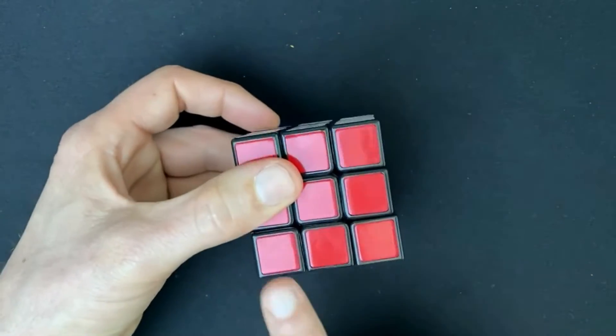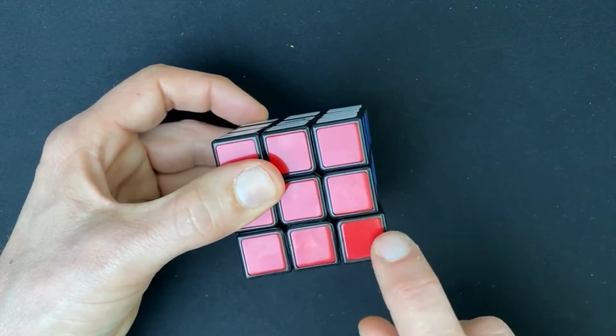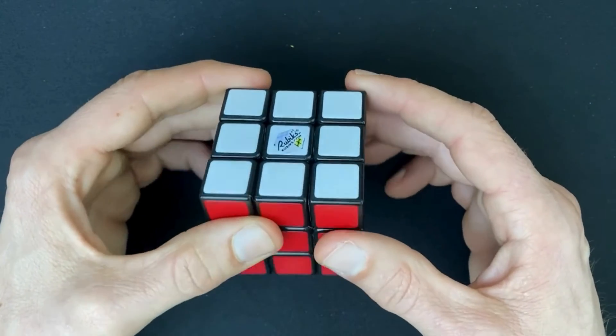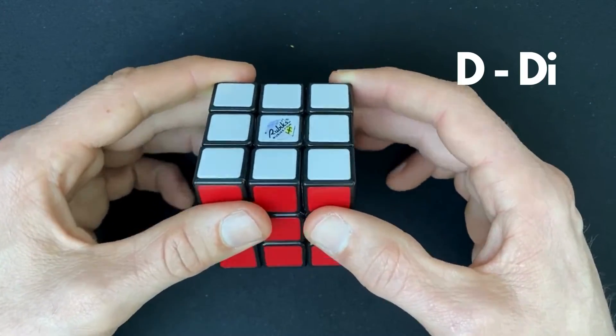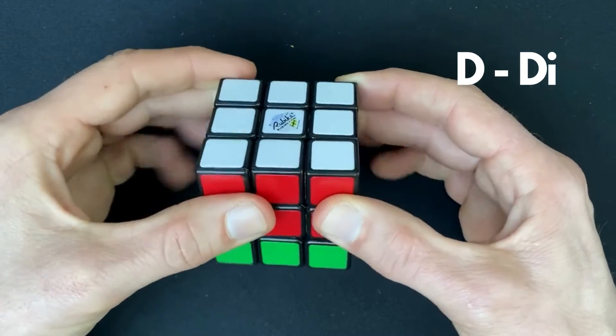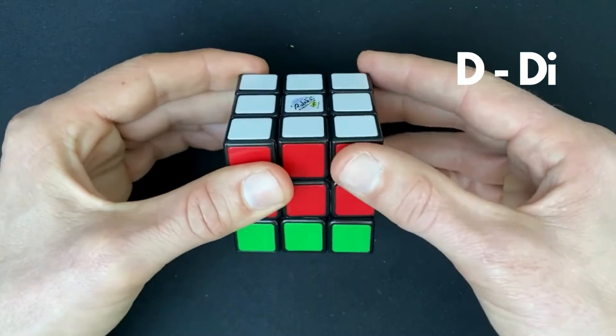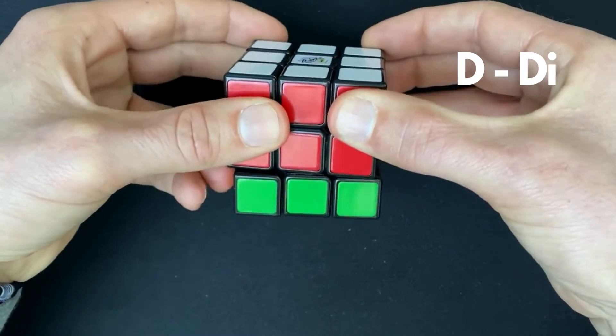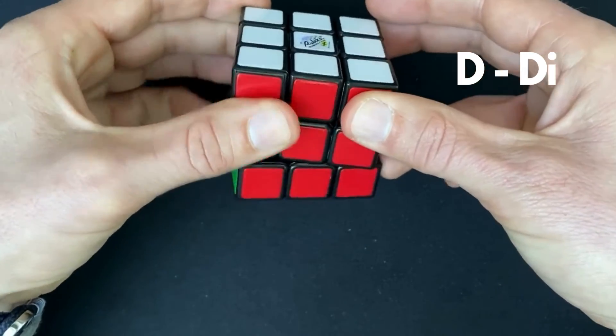Then the last layer is the bottom of the cube, and it's indicated with a D from down. And here is also a D. So D layer and D inverted. So a D and a D inverted.